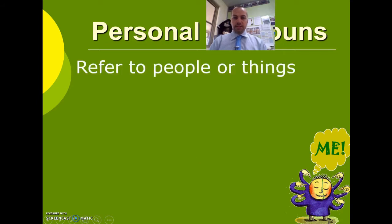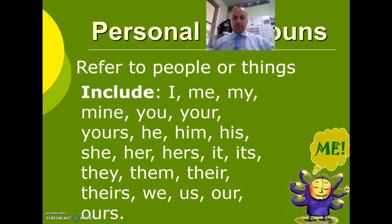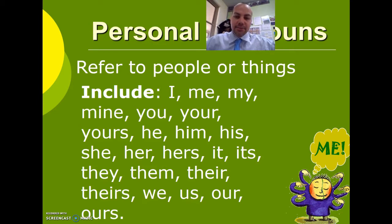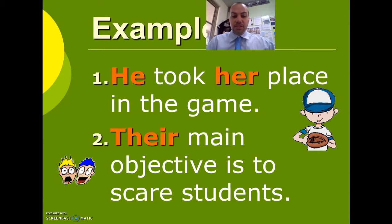Personal pronouns refer to people or things, and they include: I, me, mine, you, your, yours, he, him, his, she, hers, it, its, they, them, their, theirs, we, us, our, ours. For example: 'He took her place in the game.' 'Their main objective is to scare students.'